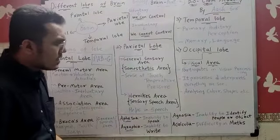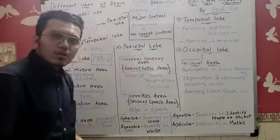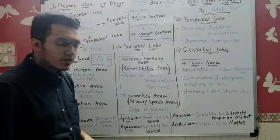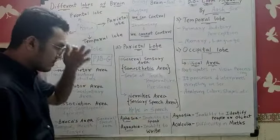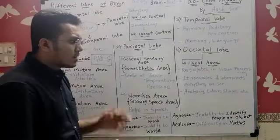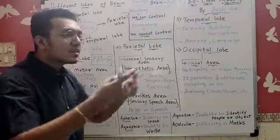Agnosia: inability to identify people or object. This is an example of occipital lobe damage. Agnosia: inability to identify people. If you have a relative, you can see, but you can't recognize.